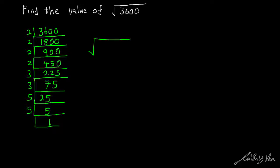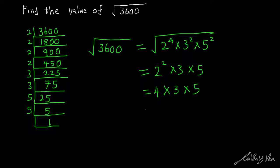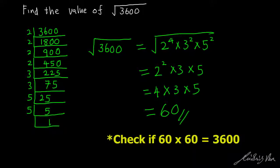So square root of 3600 equals square root of 2 to the power of 4 times 3 to the power of 2 times 5 to the power of 2. We divide all the powers by 2: 4 divided by 2 gives us 2 to the power of 2, 2 divided by 2 gives us 3 to the power of 1, and 2 divided by 2 gives us 5 to the power of 1 — we don't write power of 1 because it is the same thing. This gives us 4 times 3 times 5, which equals 60. Please remember to check: 60 times 60 gives us 3600.